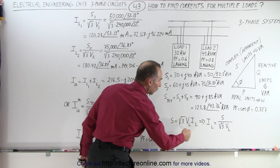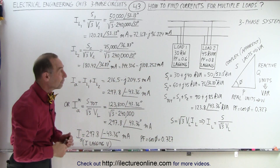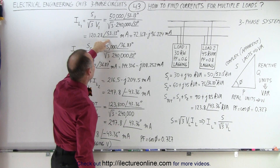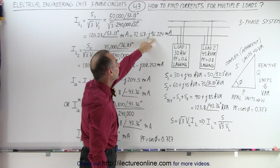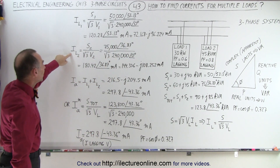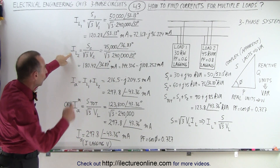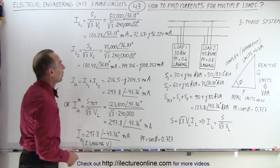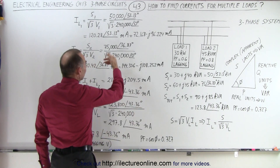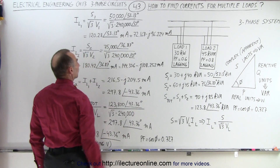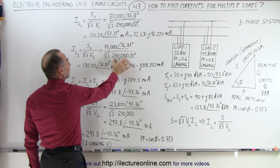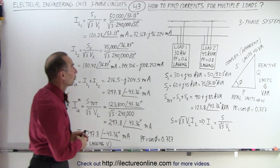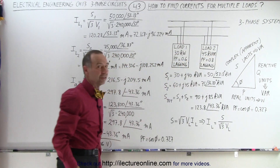You always get this very same equation, as shown in previous videos. When we calculate the current, notice the magnitude and phase angle, and then that gets converted into the real and imaginary parts of the current. We do the same for the second load: S2 has a total magnitude of 75,000 VA with a phase angle of 36 degrees, again divided by the square root of three times the line voltage. So now we have our two currents associated with the two loads on the three-phase system.